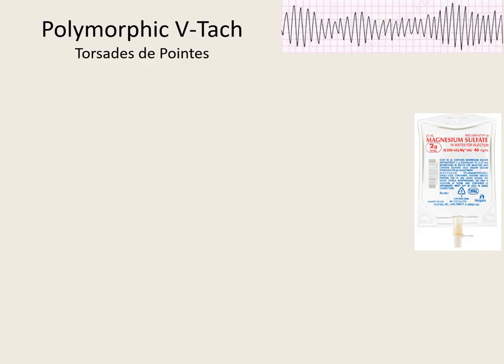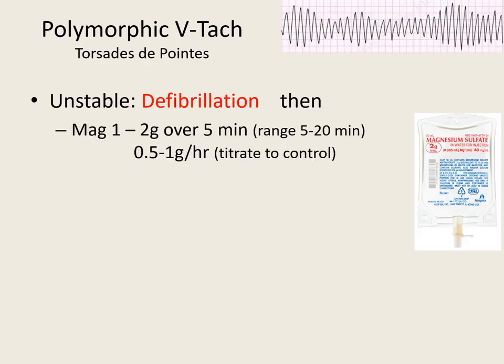The other two scenarios for torsades are unstable and dead. If they are fast and unstable, we are thinking electricity — unsynchronized defibrillation at 100, 200, 300, 360. Then we're going to do magnesium 1 to 2 grams over 5 minutes. However, they're in torsades and unstable, so we need to fix them soon. Then hopefully they convert and we go to that 0.5 to 1 gram per hour drip.